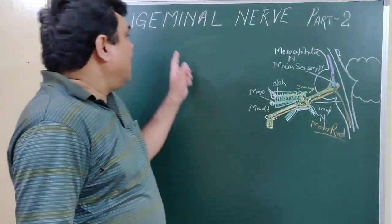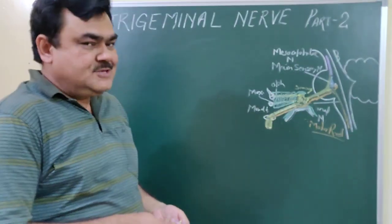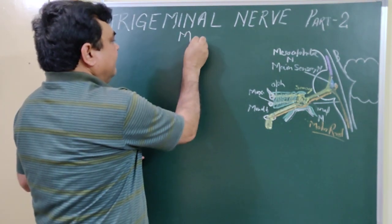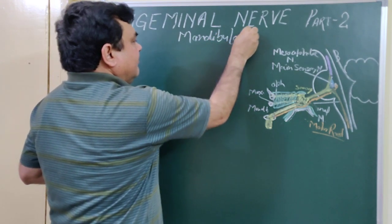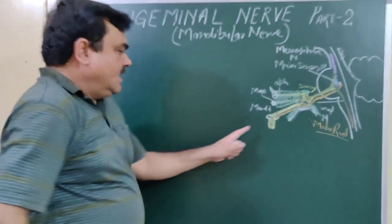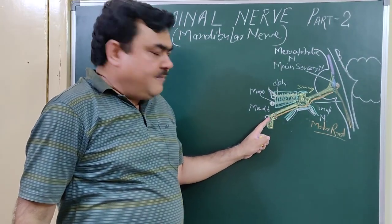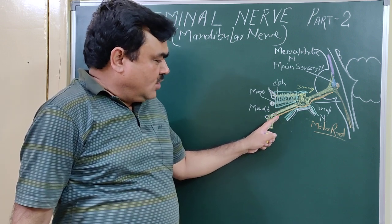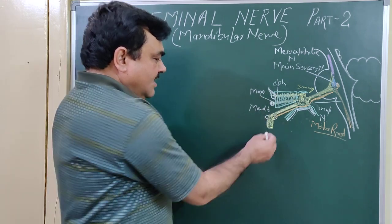We'll discuss the trigeminal nerve part 2. In this part we'll discuss about the mandibular nerve. You have seen foramen ovale — it provides passage for the sensory and motor root of the mandibular nerve, both roots passing through it.